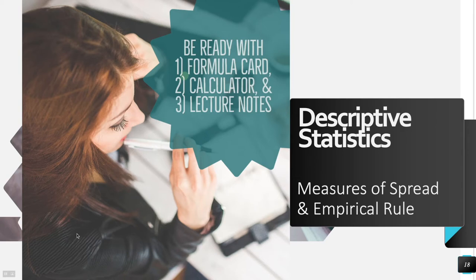Hello again and welcome to Introductory Statistics. We are continuing to cover descriptive statistics in this video. Last time we talked about graphs and measures of center — the center of our data values and our data distribution. This time we're going to talk about measures of spread, how spread out our data distribution is, and a related topic, the empirical rule.